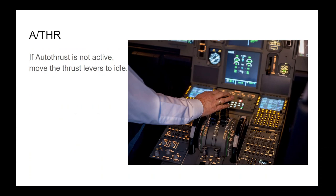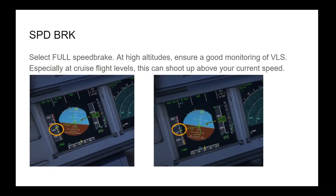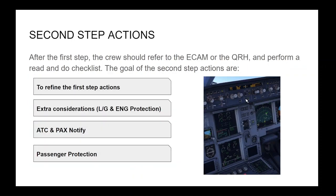If autothrust is not active, move the thrust levers to idle. Select full speed brake. At high altitudes, ensure good monitoring of VLS — especially at cruise flight levels, this can shoot up above your current speed. After the first step, the crew should refer to the ECAM or QRH and perform a read-and-do checklist. The goal of the second step actions is to refine the first step actions, look at extra considerations such as landing gear or engine protection, notify ATC and passengers, and manage passenger protection, including manually releasing passenger oxygen masks.